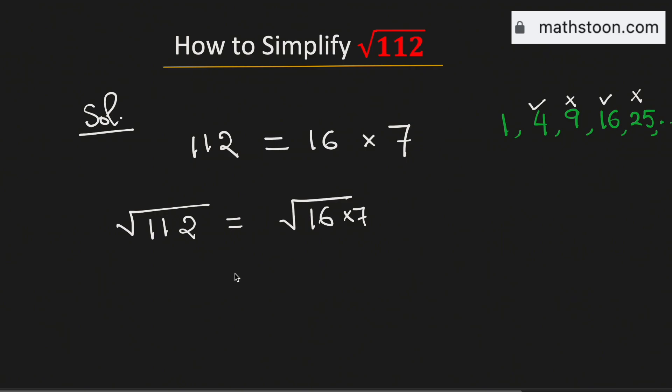Now this can be written as square root of 16 times square root of 7. As square root of 16 is 4, this is now equal to 4 square root of 7.